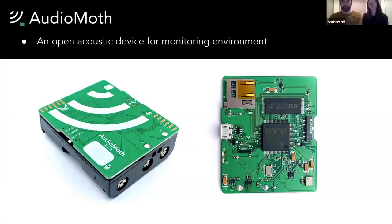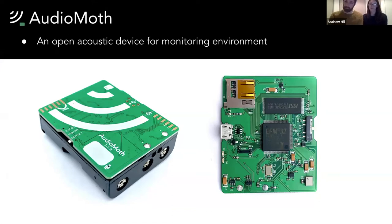So what is AudioMoth? AudioMoth is an open source acoustic device. It's very low cost — $50 US — and it consists of a MEMS microphone, which is like a smartphone microphone, very small at about 10mm by 20mm, a micro SD card, and most importantly an ultra-low-power embedded microcontroller. With this we can program the firmware and run detection algorithms on the device. We've also developed a configuration application where you can set the time, sample rates, and recording schedules using a desktop app, making it quite simple for a user to use.